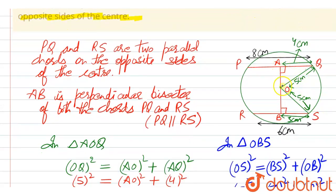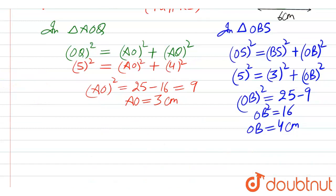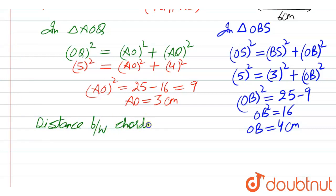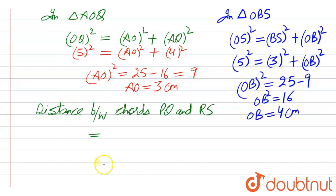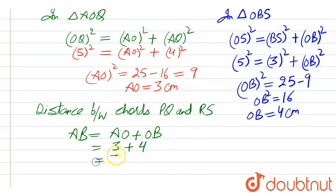The distance between the two chords is AO plus OB. So AB = AO + OB. We found AO = 3 centimeters and OB = 4 centimeters, so the total distance between chords PQ and RS is 7 centimeters.